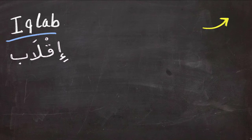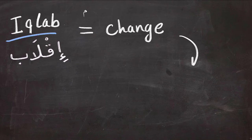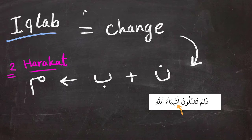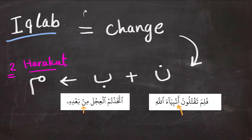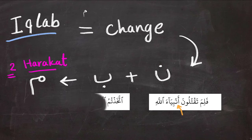Second is Iqlab. Iqlab is something we discussed in the Quranic symbol lesson, and it is distinguished with the Mim symbol on top of the word. Iqlab means change. When Ba follows noon sakinah, you should assimilate them into Mim with two harakat. And as you can see, it is not necessarily within the same word — it will also be between two words.